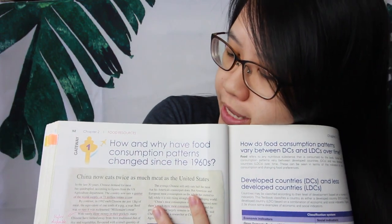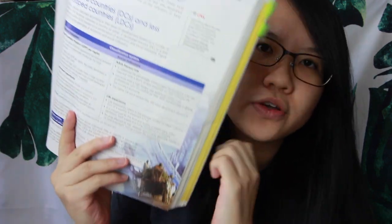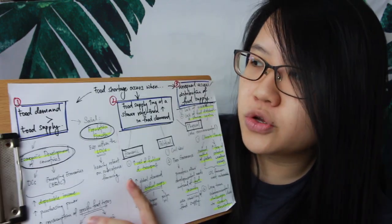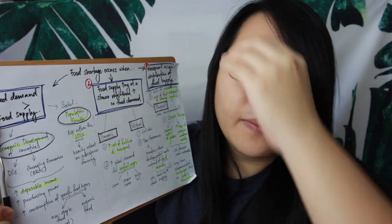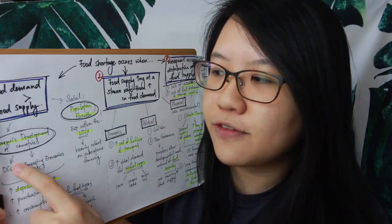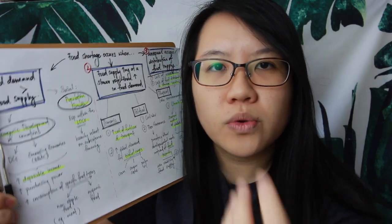A common student question is how Gateway 1 is relevant and how it will be tested in exams. The inquiry question for Gateway 1 is: how and why have food consumption patterns changed since the 1960s, particularly comparing DCs versus LDCs and emerging economies? This is relevant because food shortage occurs when food demand exceeds food supply, so understanding consumption patterns helps justify rapid increases in specific food types.